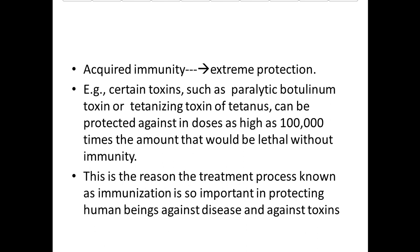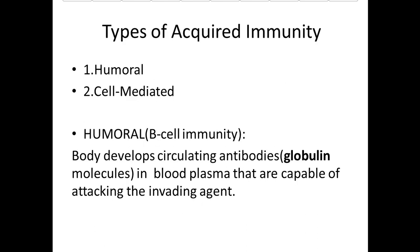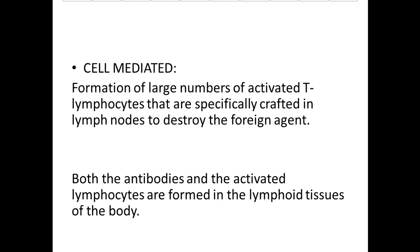This is the reason the treatment process known as immunization is so important in protecting human beings against disease and toxins. Types of acquired immunity: humoral immunity and cell-mediated immunity. Humoral immunity is B-cell immunity — the body develops circulating antibody globulin molecules in the blood plasma capable of attacking invading agents. Cell-mediated immunity involves formation of large numbers of activated T-lymphocytes in lymph nodes to destroy the foreign agent.